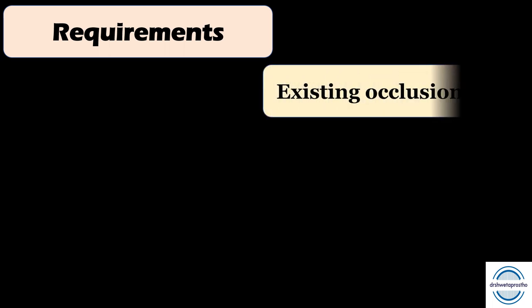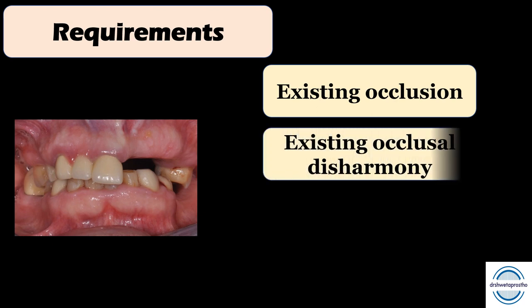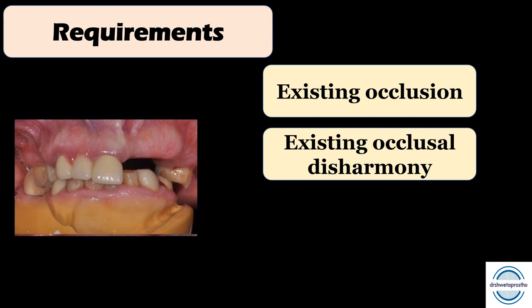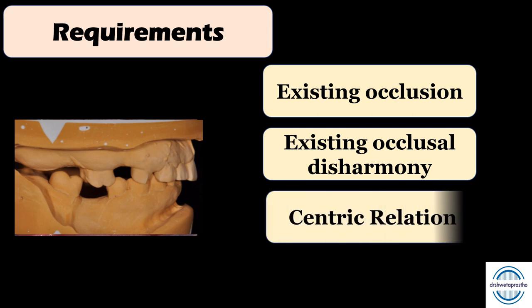There are certain requirements to establish a satisfactory occlusion. First is analyzing the existing occlusion — what is present in the mouth and what stage it is in. Second is identifying existing occlusal disharmony. Teeth often change their position when there is loss of teeth; the opposing teeth may have supra-erupted, the adjacent teeth may have moved, leading to malocclusions. These need to be corrected before we establish occlusion for the RPD.